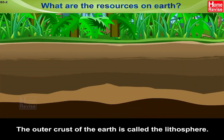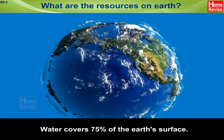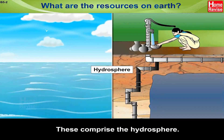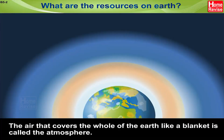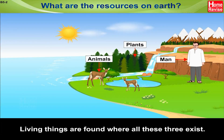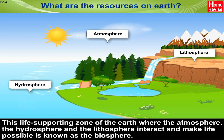The outer crust of the Earth is called the lithosphere. Water covers 75% of the Earth's surface and is also found underground — these comprise the hydrosphere. The air that covers the whole of the Earth like a blanket is called the atmosphere. Living things are found where all three exist. This life-supporting zone where the atmosphere, the hydrosphere and the lithosphere interact and make life possible is known as the biosphere.